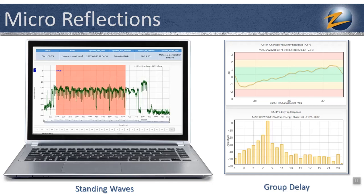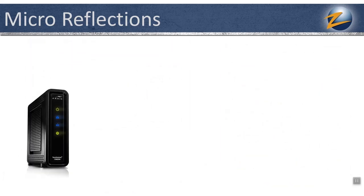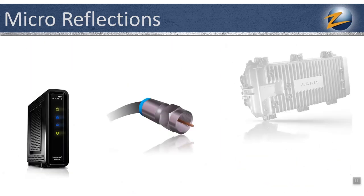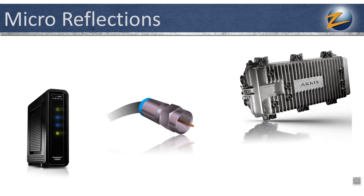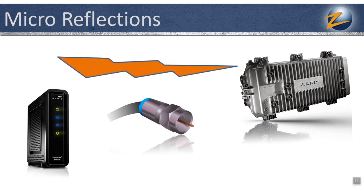Microreflections are caused by an impedance mismatch in the cable plant. In an ideal plant, the signal source, the cable — whether coax or fiber — and the load, such as an amplifier, should have the same impedance. When this condition exists, all incident energy from the source is absorbed by the load, excluding any energy lost by attenuation in the transmission medium from taps, filters, splitters, etc.